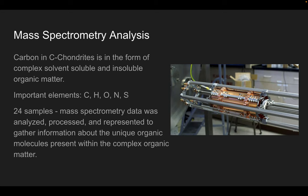Our project used FT-ICR mass spectrometry to analyze the complex organic matter in 24 meteorite samples. Mass spectrometry helps identify different compounds by turning molecules into charged particles which are then analyzed based on their unique mass to charge ratios.